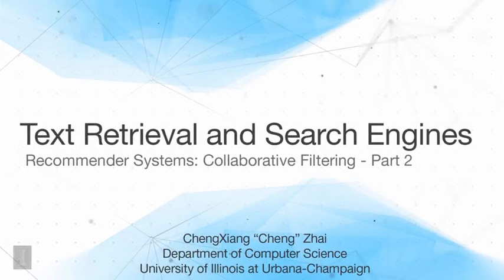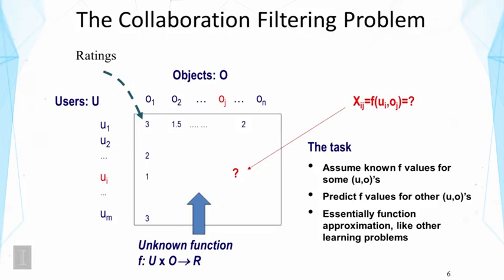We're going to talk about a basic strategy based on similarity of users, predicting the rating of an object by an active user using the ratings of similar users to this active user.